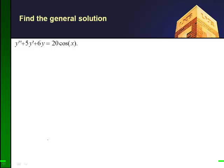Okay, so let's find a general solution of y double prime plus 5y prime plus 6y equals 20 cosine x. So now we have a sinusoidal forcing. Let's see what happens in this problem. So first, let's go ahead and find the homogeneous part.